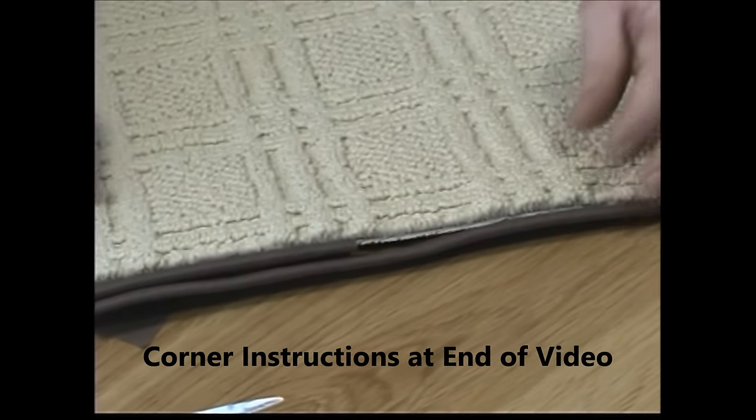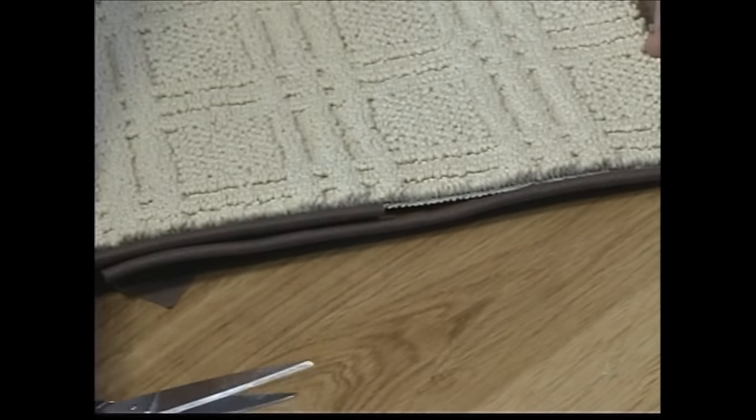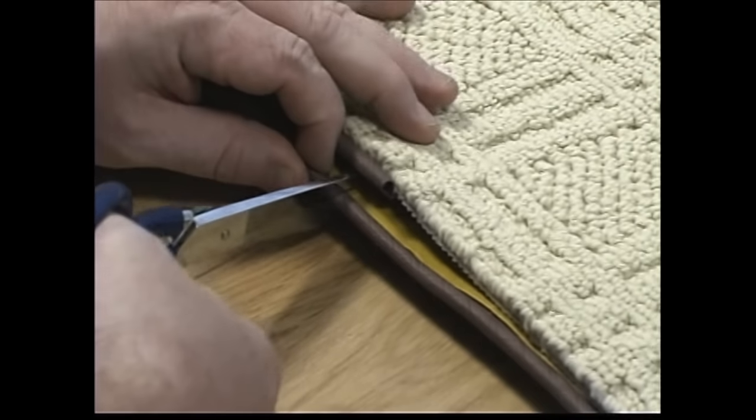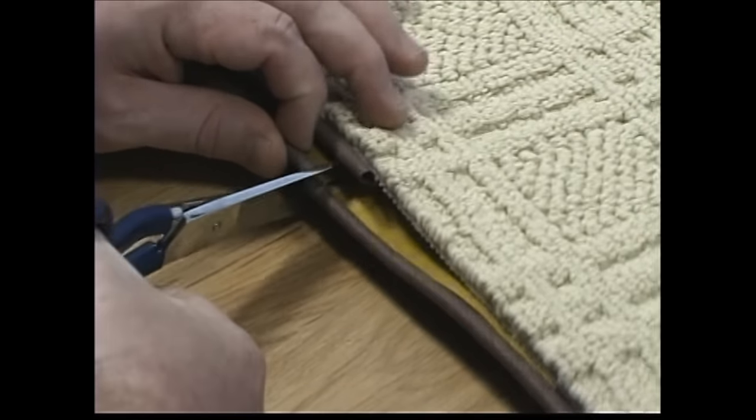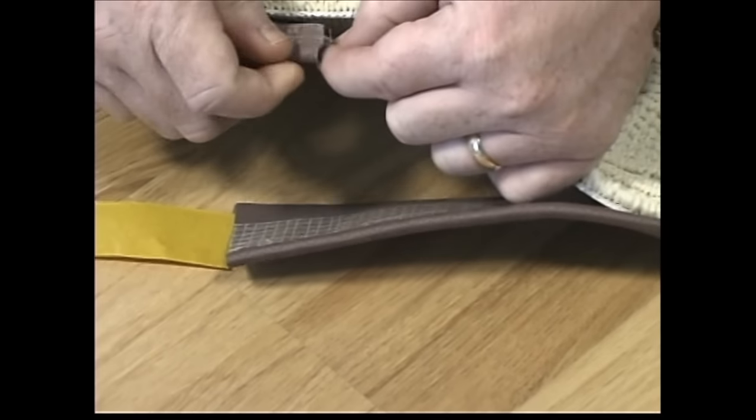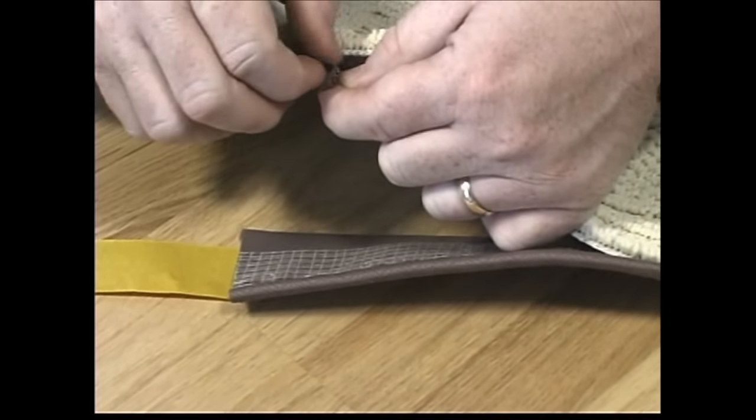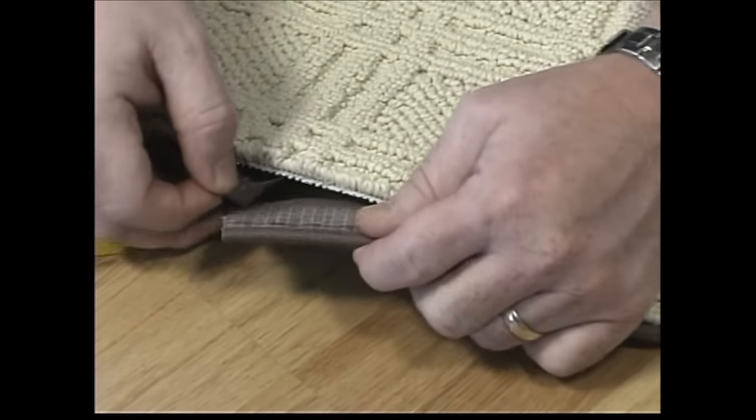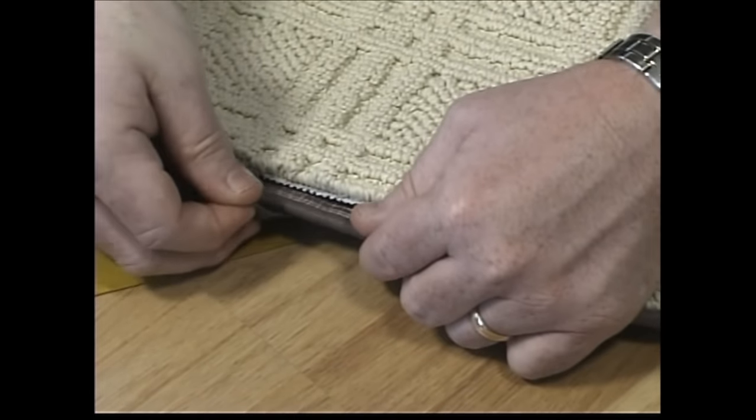Now you're ready to finish off the Instabind regular binding. To finish off, line up your last cut with the void from your first cut. Now simply insert the end into the hollow portion you created at the start and your regular binding is complete.